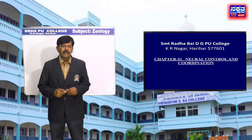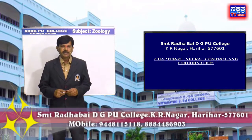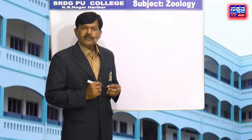The first question on this chapter is: the process by which two or more organs interact and complement the functions of one another is called? The given options are A. Homeostasis, B. Coordination, C. Accommodation, D. Adaptation.